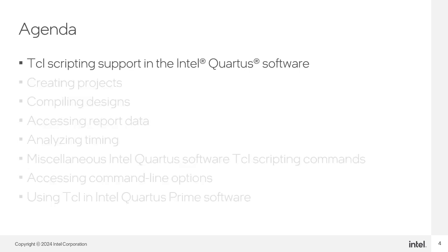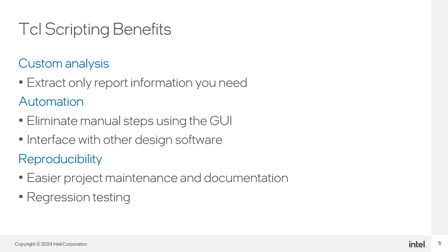Let's start with general Tickle Scripting support in the Intel Quartus software. I'll talk about three main benefits of using scripting: custom analysis, automation, and reproducibility. Custom analysis refers to extracting only the report information that you need. Intel Quartus Prime Software Tickle commands make it easy to extract only the information you need. Automation means you will be able to eliminate manual steps in the graphical user interface — for example, you can eliminate repetitive steps when making PIN assignments.